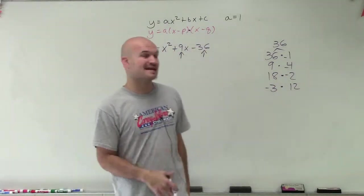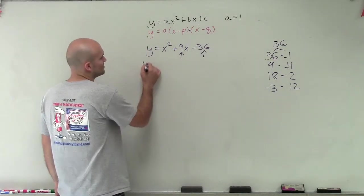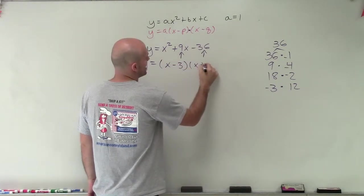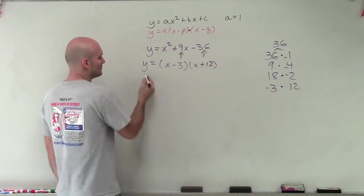So out of these factors, which one adds up to positive 9? Well, that's going to be those two factors right there. Now I can just rewrite that as (x - 3)(x + 12). Therefore, you have the factor form.